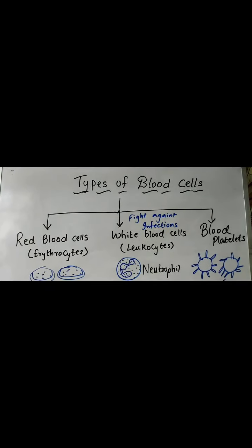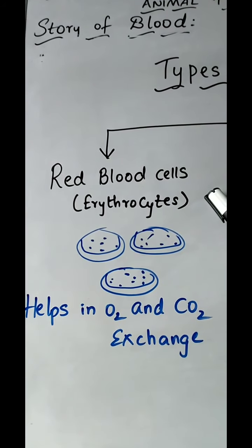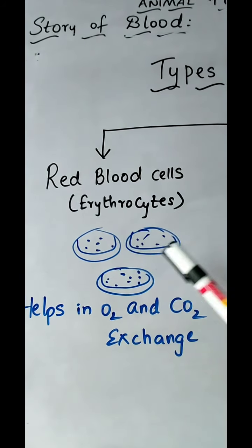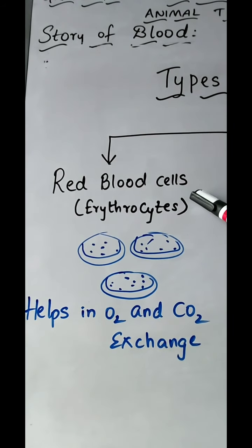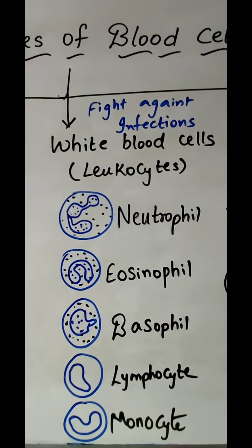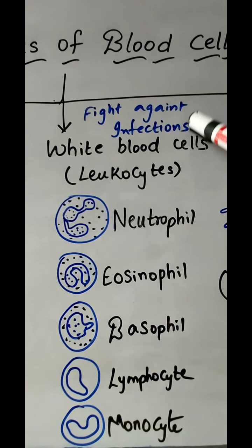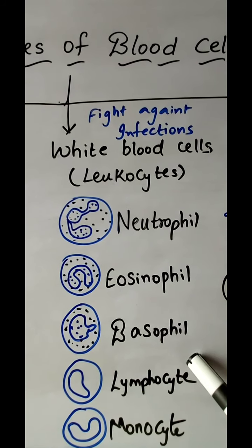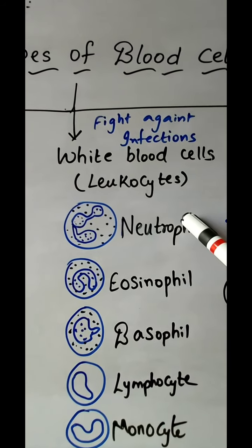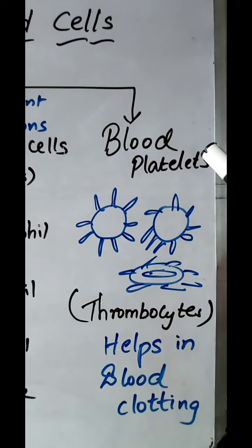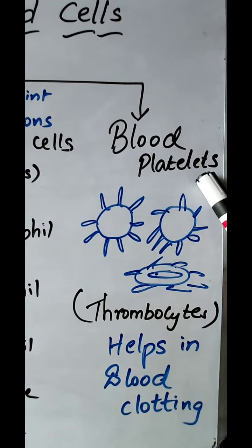There are 3 different types of blood cells: red blood cells (RBCs), white blood cells (WBCs), and blood platelets. RBCs are also known as erythrocytes and are helpful in the exchange of gases — oxygen and carbon dioxide. White blood cells are also known as leukocytes and fight against infections. Blood platelets are also known as thrombocytes and are useful for clotting the blood.